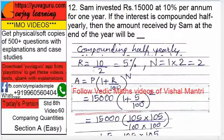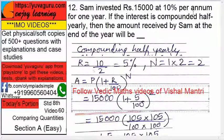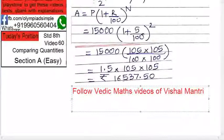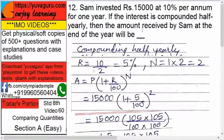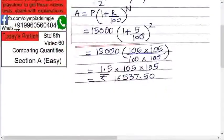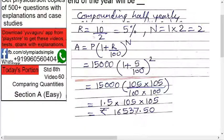Now what is this answer? This is the amount received by this person after one year if he invests this amount with half-yearly compounding. This is the total amount — this is not the compound interest. Now if you are asked to find the compound interest, what you do is: this is the amount and this is the principal 15,000. Subtract principal from the amount. So 16,537.5 minus 15,000 gives you 1,537.5. That will be the compound interest.